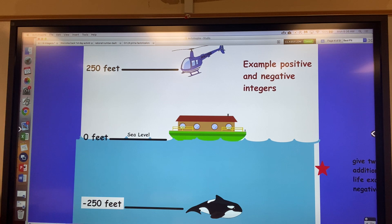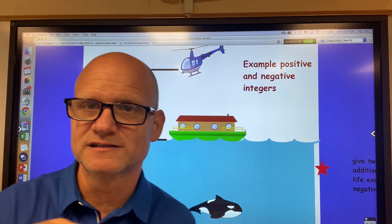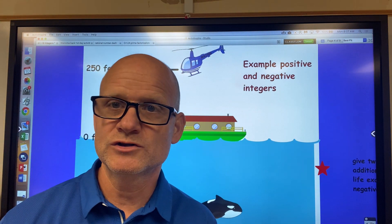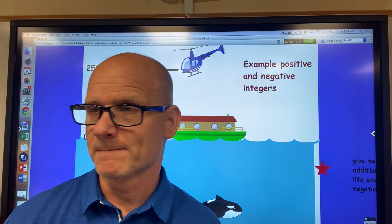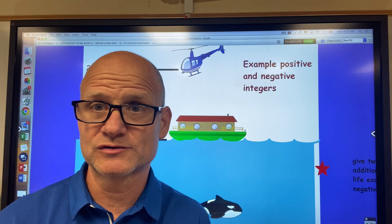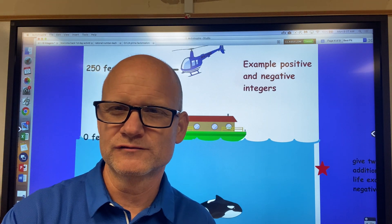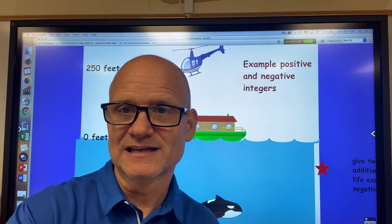So here's an example of a positive and negative integer. Think about this, that sea level, that's zero feet. And so when you look at a map, a geographical map, it'll show the elevation of certain areas. And it's all based at sea level.